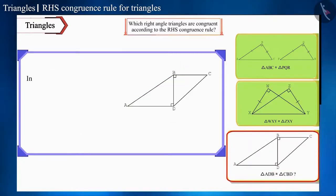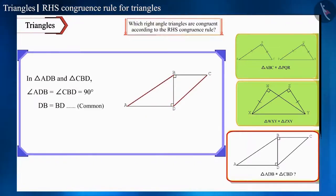Now let's move to the third pair. In the third pair of triangles also, only the right angles and one common side are equal, but their hypotenuse are not equal. Therefore, these triangles will not be congruent by the RHS congruence rule.